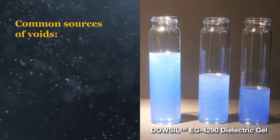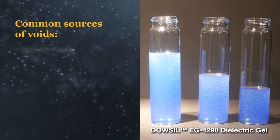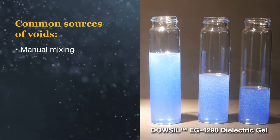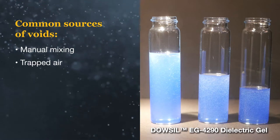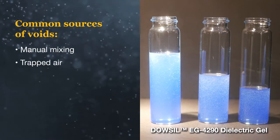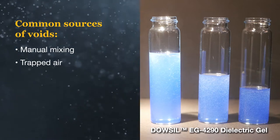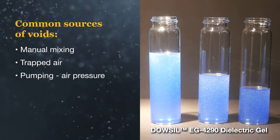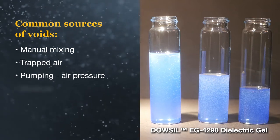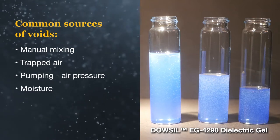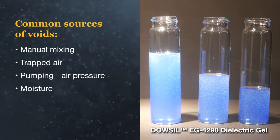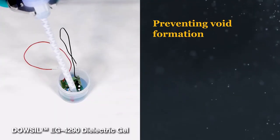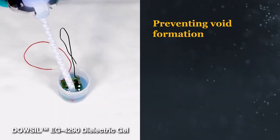The most common sources of voids come from manually mixing two-part products, from air trapped under components during dispensing, from using air pressure to pump silicones, and from moisture coming out of substrates during heat cure.